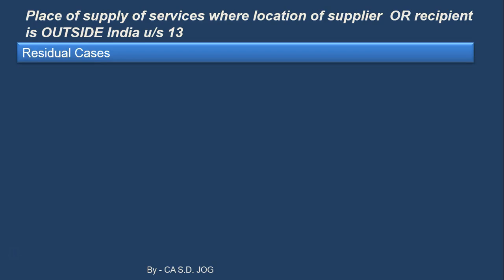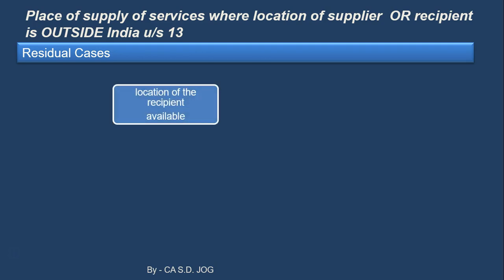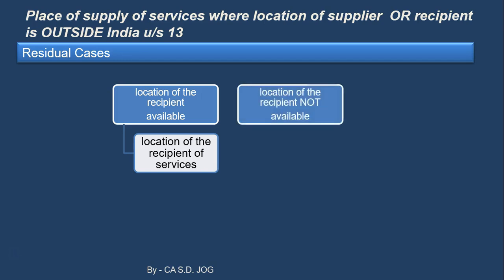Now the residual cases: if you want to determine the place of supply of services and any of the above clauses are not applicable, then you fall in residual cases. If the location of the recipient is available, then the location of the recipient of services will become the place of supply of services. If the location of the recipient is not available, then the location of the supplier of services will become the place of supply of service.